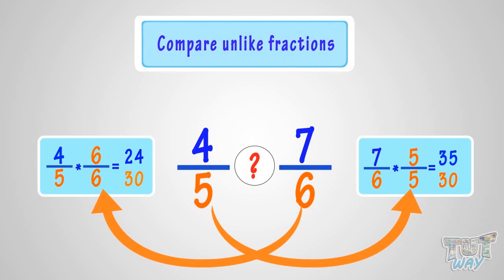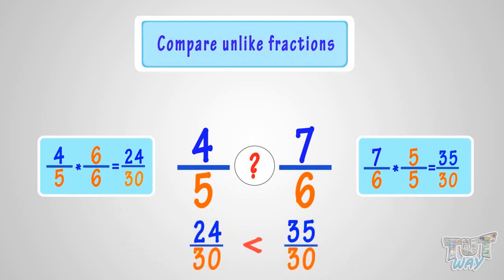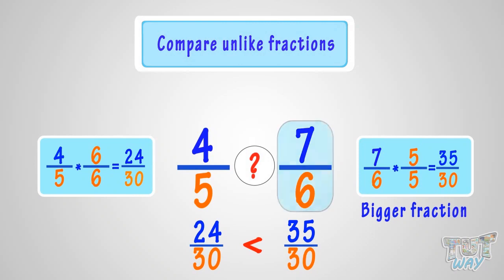Now we have converted these fractions to like fractions, as the denominators are the same. Just compare the numerators to find the bigger fraction. Here, 35 is greater than 24, so 35 by 30 is the bigger fraction — or, 7 by 6 is the bigger fraction.